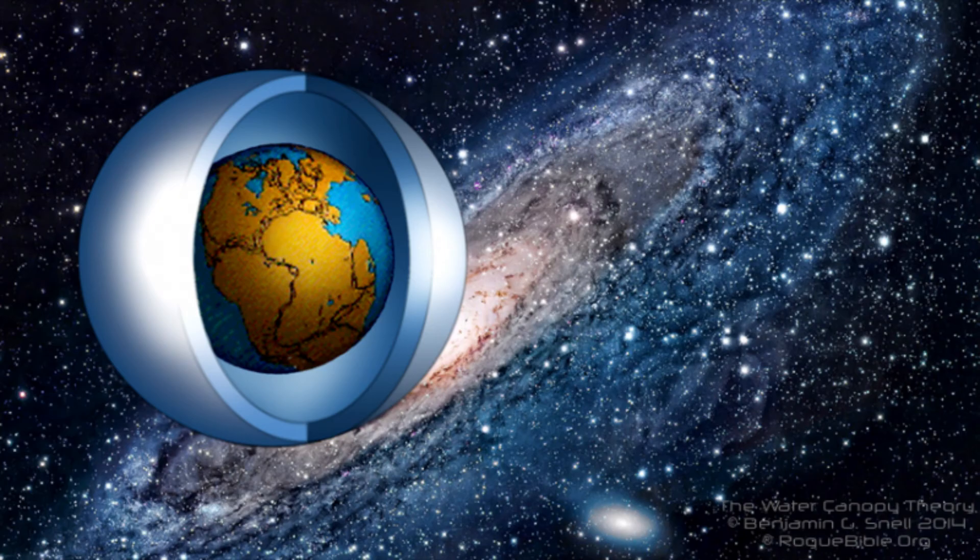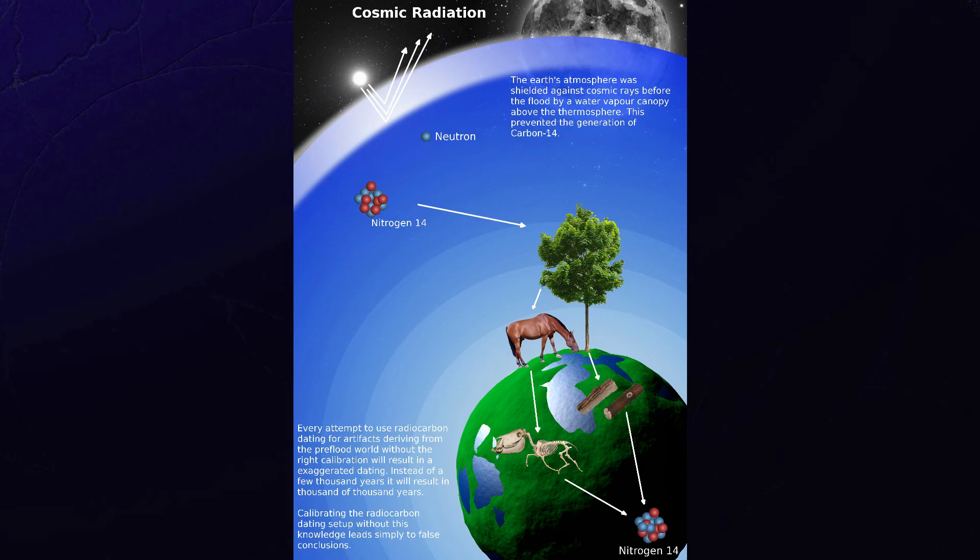It also raised the amount of oxygen, the partial pressure of oxygen on planet Earth. But from the context of this particular subject of carbon dating, it filtered out the radioactive solar radiation, that is the x-rays and the gamma rays. So the x-rays and the gamma rays were filtered out by the canopy of water before the flood. And the flood happened roughly 4,400 years ago.